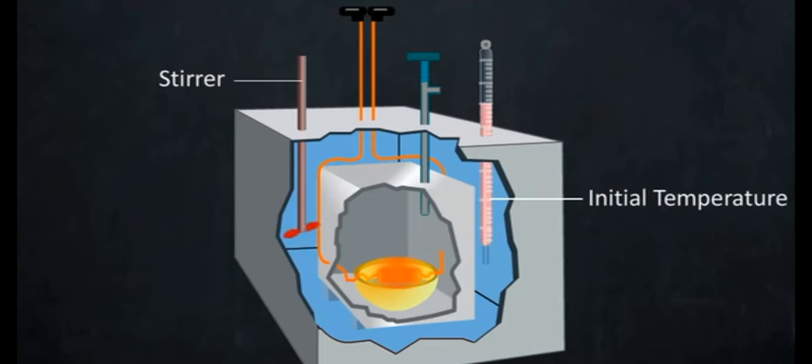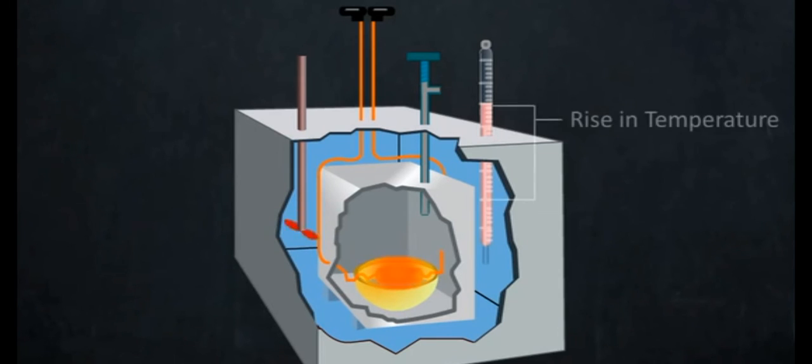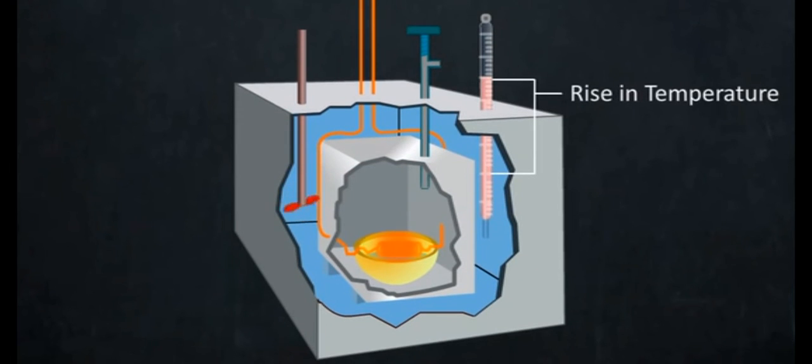The heat energy evolved during the chemical reaction raises the temperature of water which is carefully recorded from the thermometer. By knowing the rise in temperature and the heat capacity of the calorimeter, the amount of heat evolved in the reaction can be calculated.